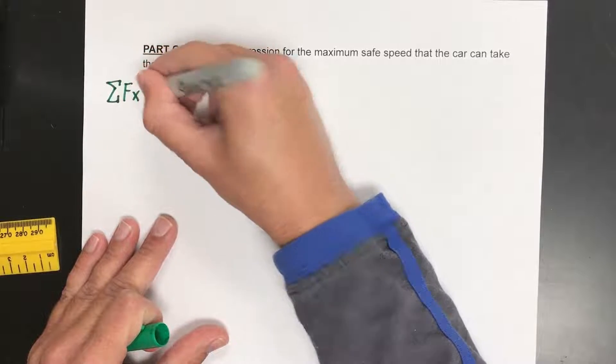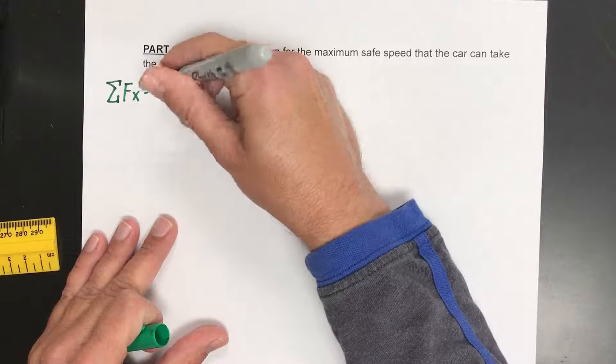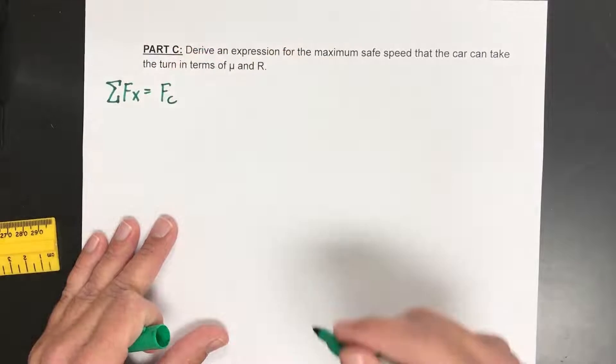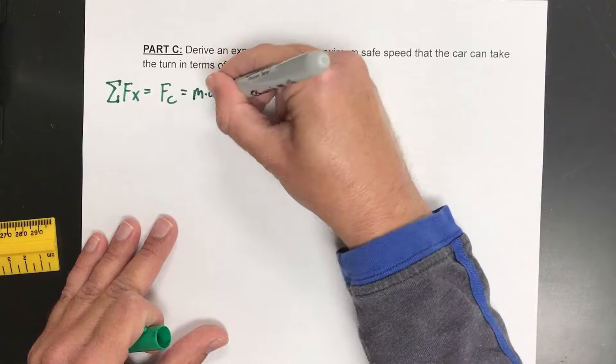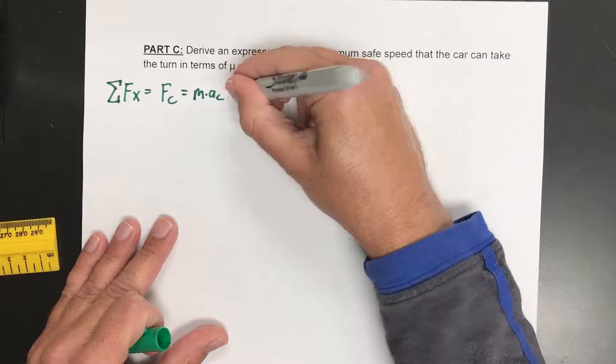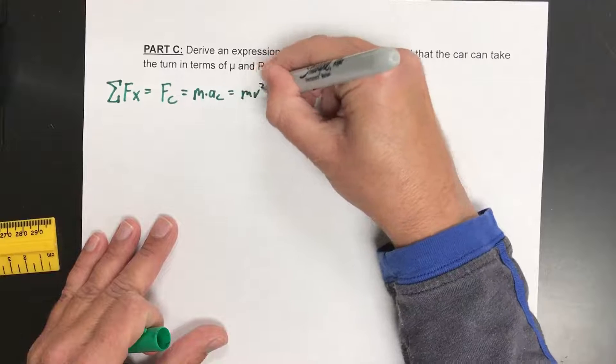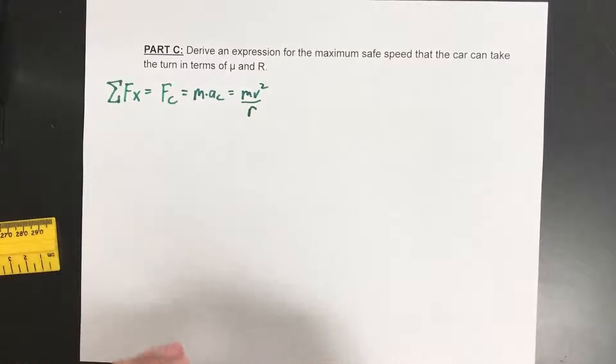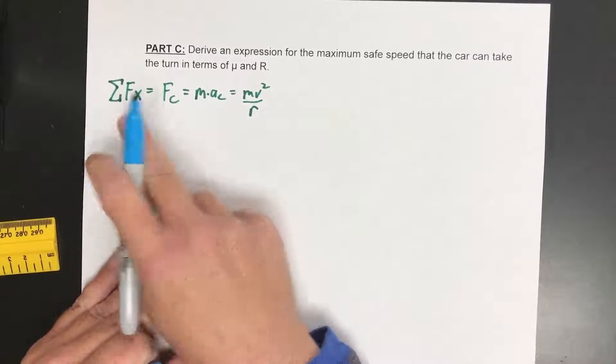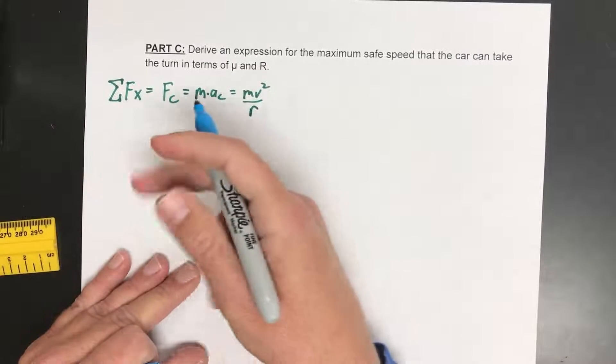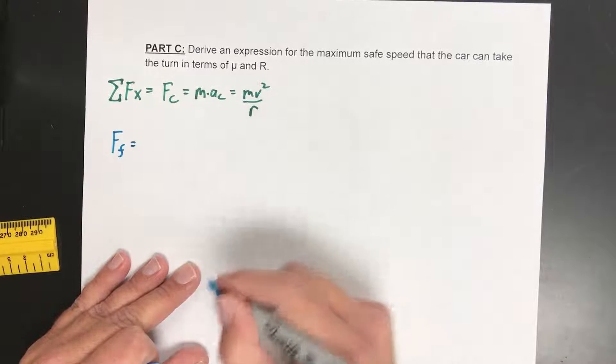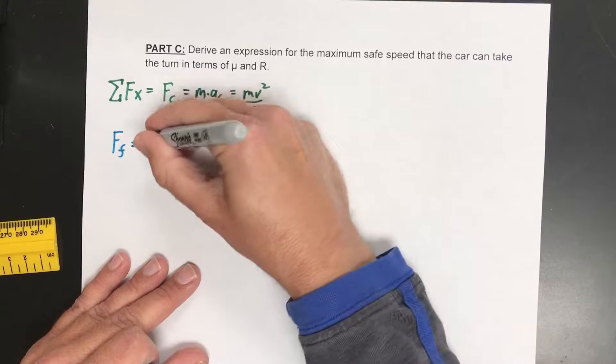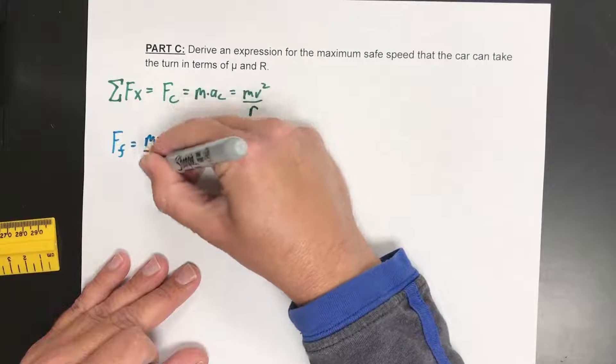We know that the sum of the forces in the x direction is going to be a centripetal force because it's going in the circle. That is to say mass times centripetal acceleration, which is to say mv squared over r. So now what are the forces in the x direction pointing towards or out of the circle? There's only one. The force of friction is the only force, so that must be equal to mv squared over r.